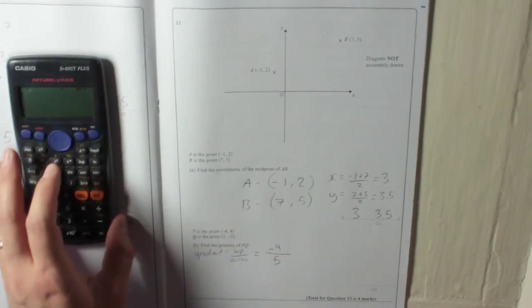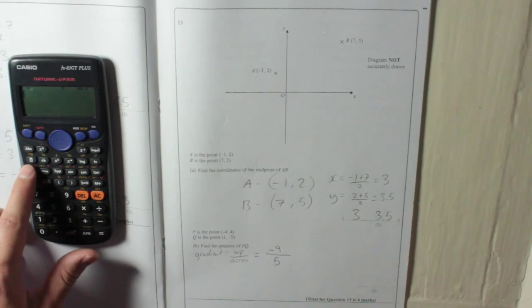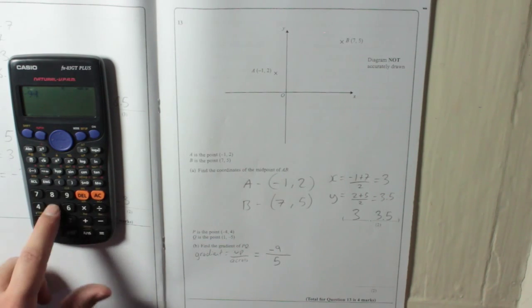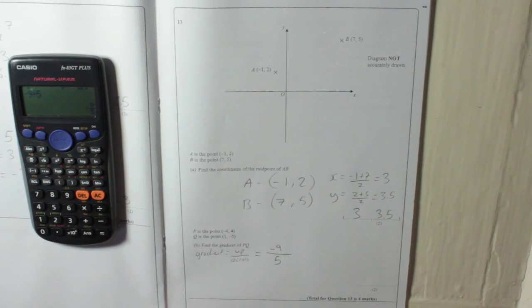Which you could just give it as that. Or if you want to do it as a decimal, that would be minus 9 divided by 5, which is minus 1.8. So if you can see it, so let's go ahead and remove. All right.